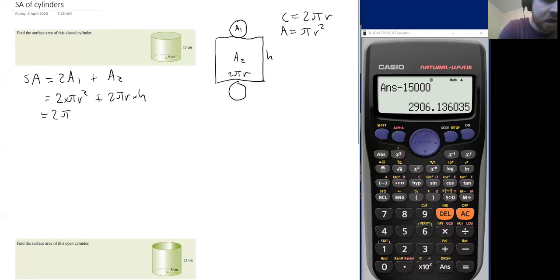2π times 6² plus 2π times 6 times 15. We didn't have to convert because we have a radius in our question. We don't have a diameter. And now we can plunk that in our calculator and we will get an answer.